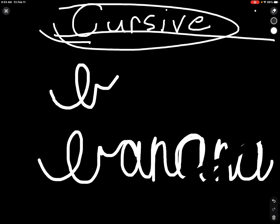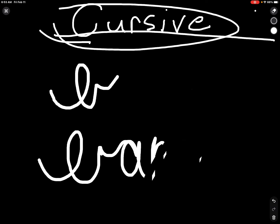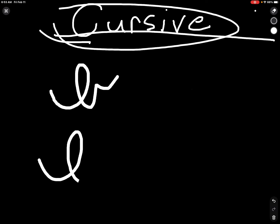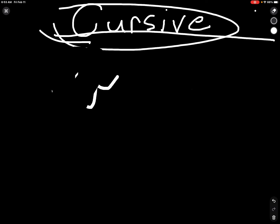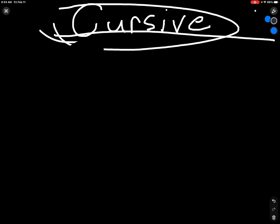Now we're just going to do C. C is also lazy because they don't follow the tail rule. In my cursive book at school they're really, really lazy and they don't follow the rule of cursive. Normal C is like that — this is the normal way.